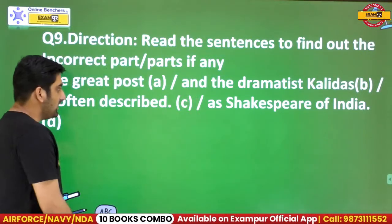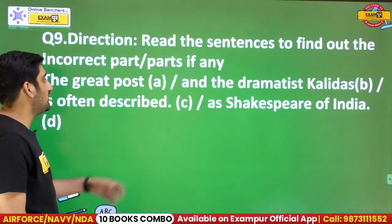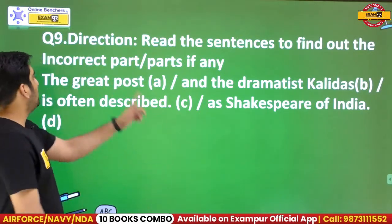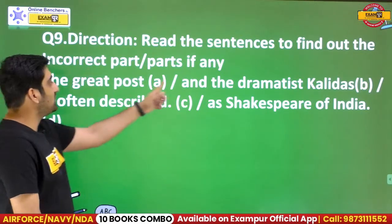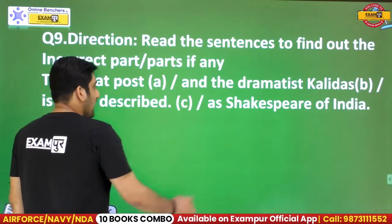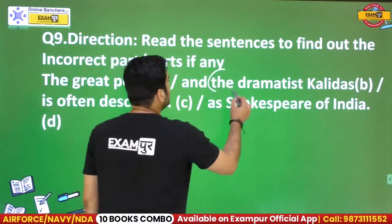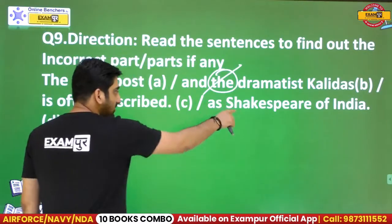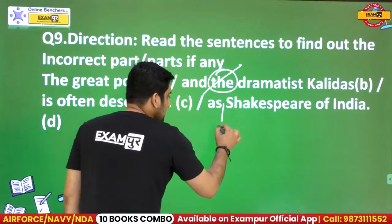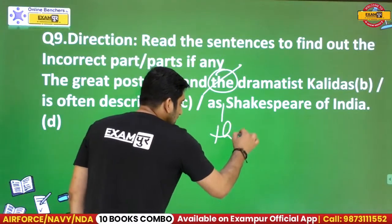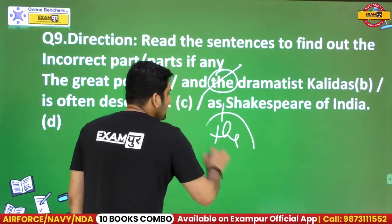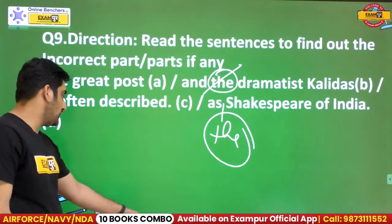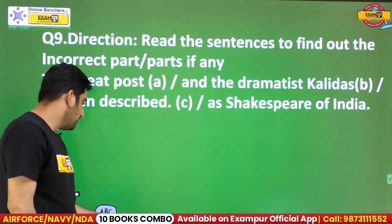I hope you understood. In this question, there are two errors: the first 'the' before 'dramatist' has to be eliminated, and before 'Shakespeare' we need to use article 'the,' so that the sentence will be correct.